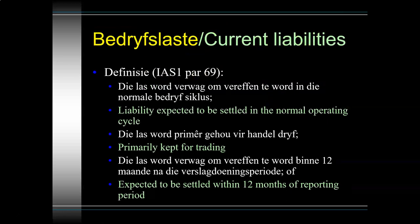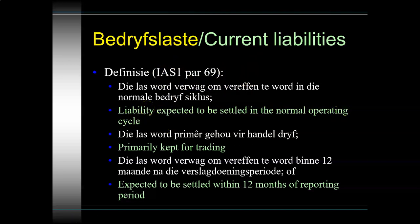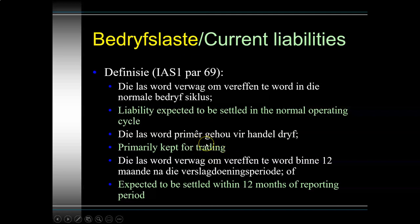Creditors are shown on the statement of financial position under trade and other payables as a current liability. It is important to understand the definition of a current liability: number one, a liability expected to be settled in the normal operating cycle of the entity - the time from purchasing inventory to selling it and receiving the money. Number two, it must be held primarily for trading purposes - and 99.99% of our creditors originated from the purchase of trading inventory.